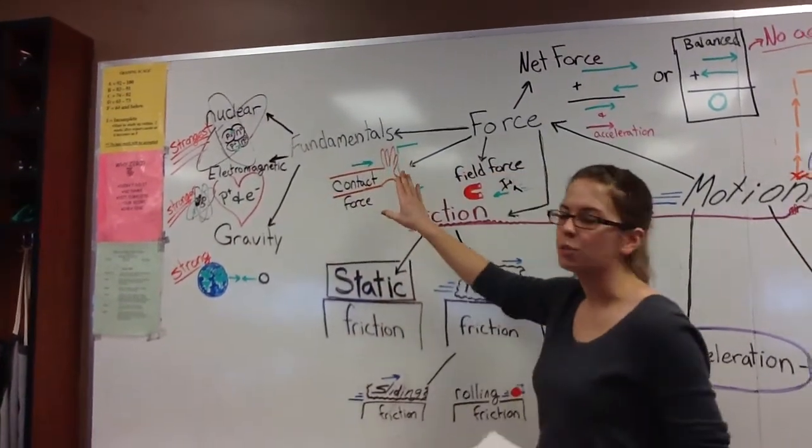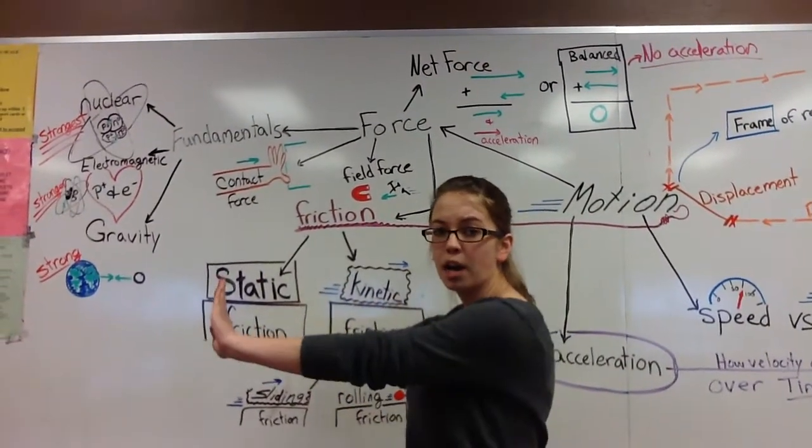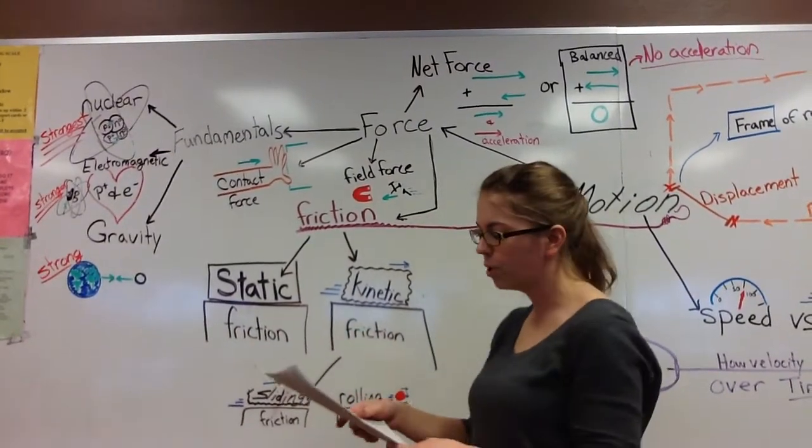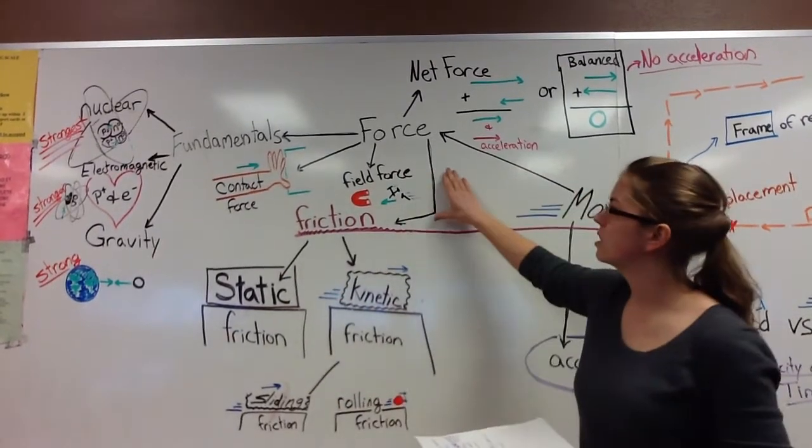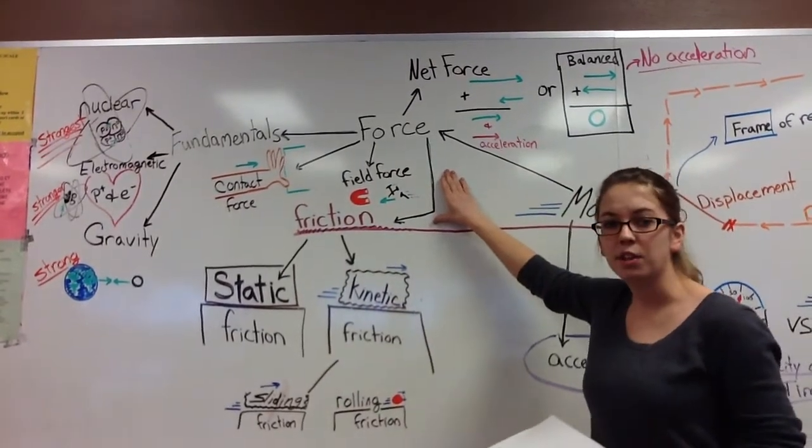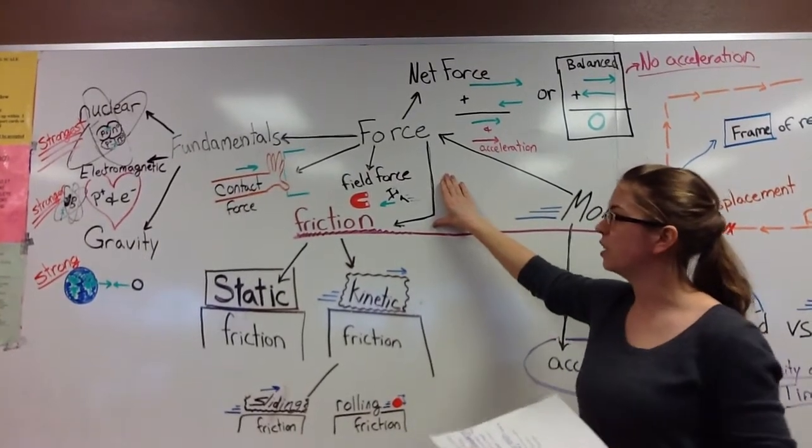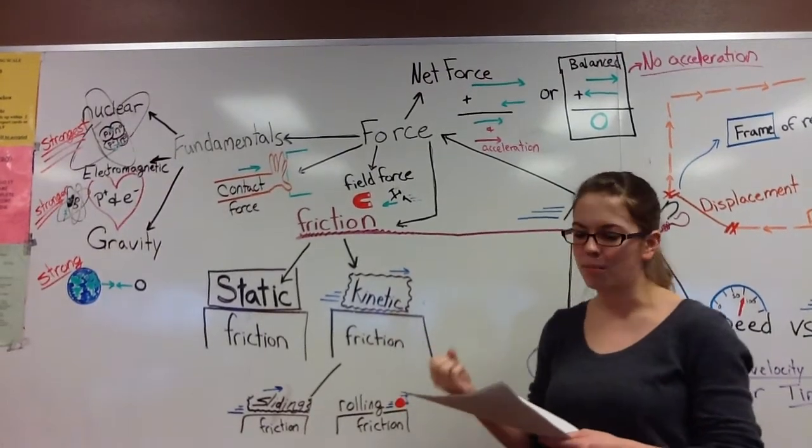Forces can either be contact forces, such as me pushing a box across a table, or pulling something. So pushing and pulling are contact forces. Or field forces. Gravity is a field force. Your magnet sticking to a fridge is a field force. It doesn't require contact in order to be acting on an object.